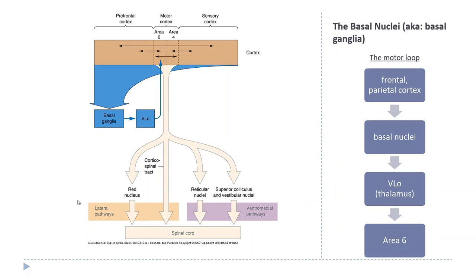The basal nuclei are a group of different brain structures deep in the brain, mostly in the forebrain, that get input from the cerebral cortex — especially the prefrontal and parietal lobes, though pretty much every cortical region has a projection into the basal nuclei. The basal nuclei then project to the thalamus, to a region called the ventrolateral nucleus, which projects back to the motor cortex, specifically area 6.